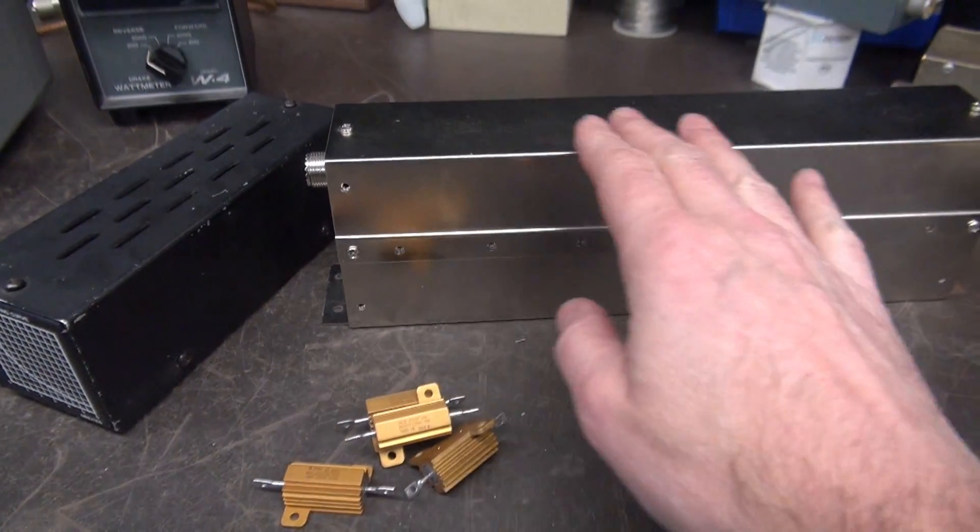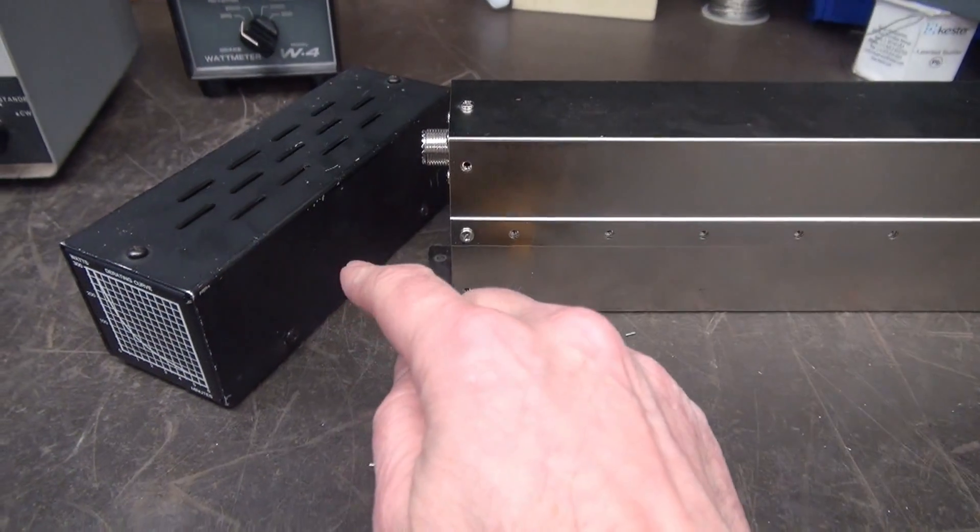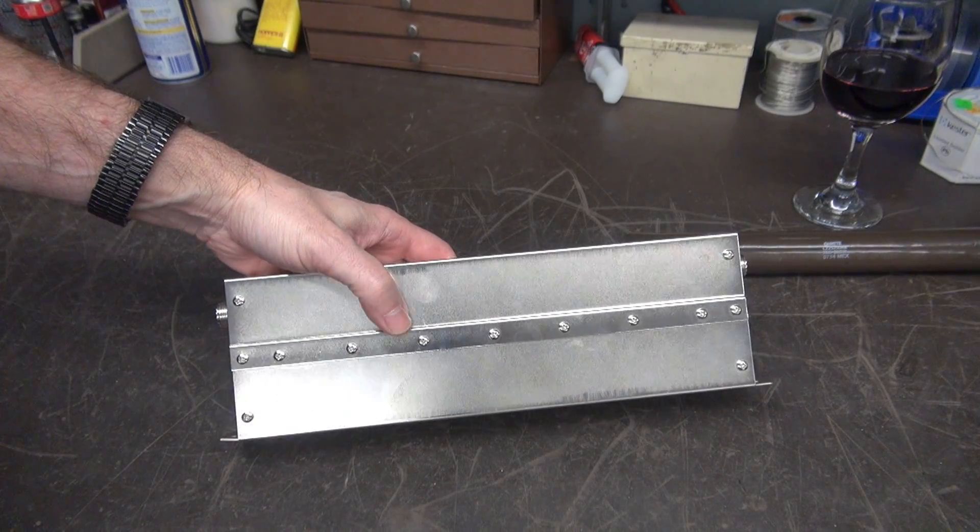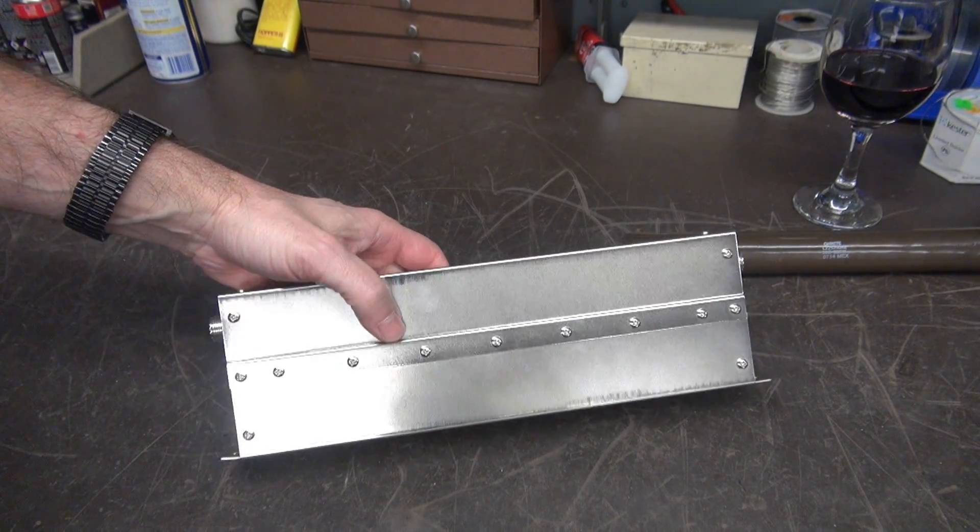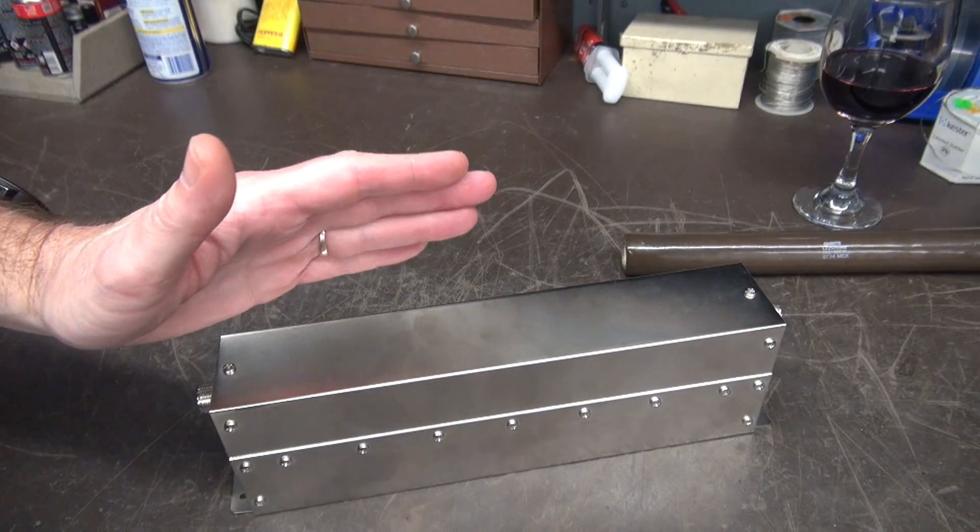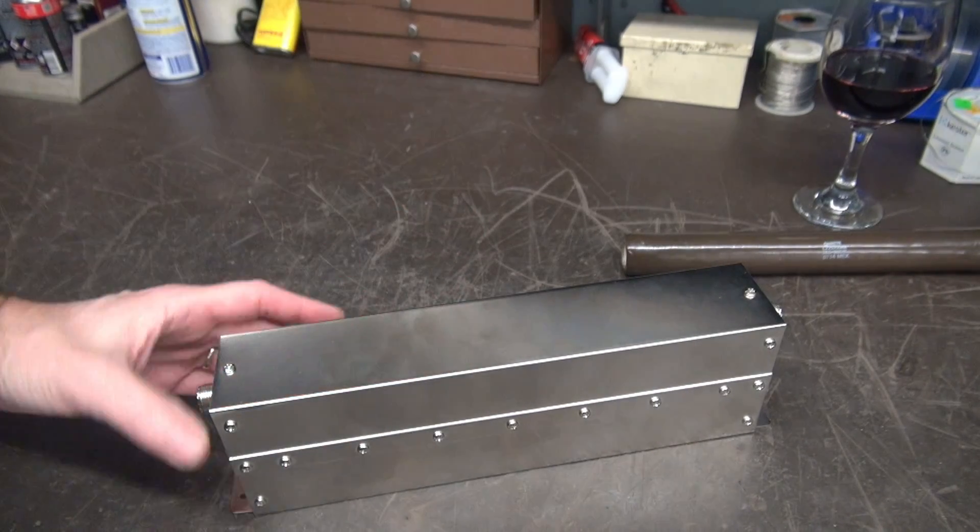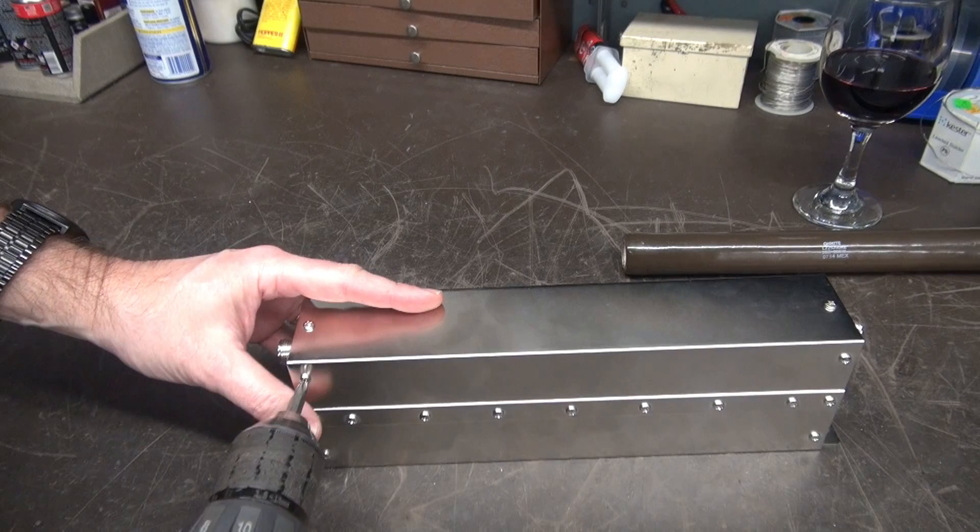Alright, so luckily this enclosure is just held together with about 3,000 screws. It could be worse though, some of these are actually pop riveted together so you'd have to drill them all out. So anyway, let's get the screws out of this baby.